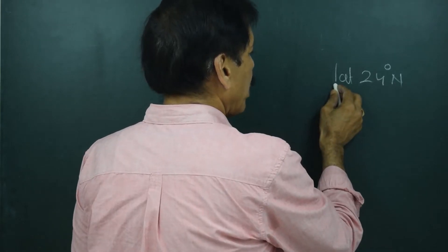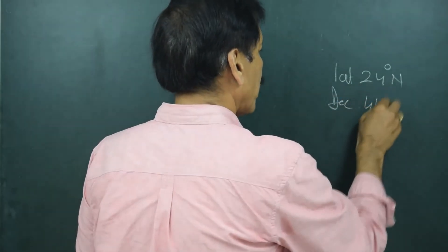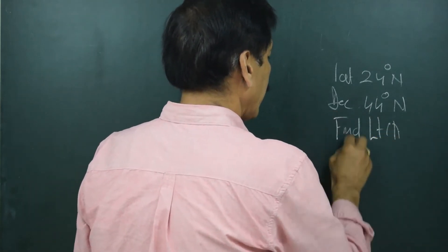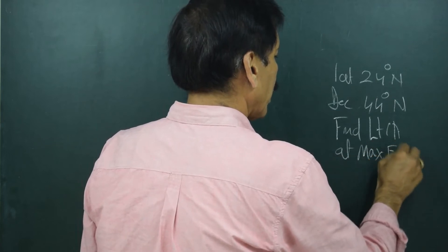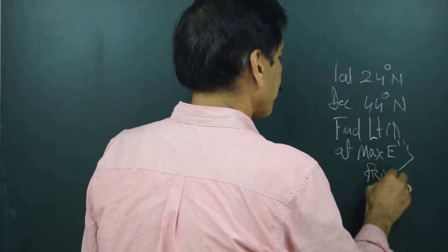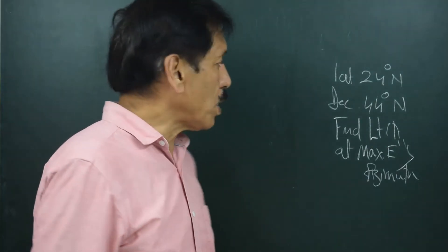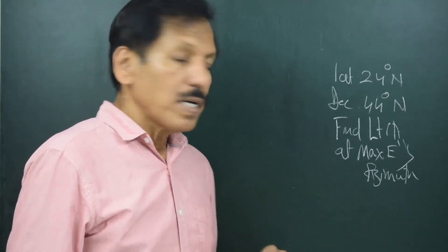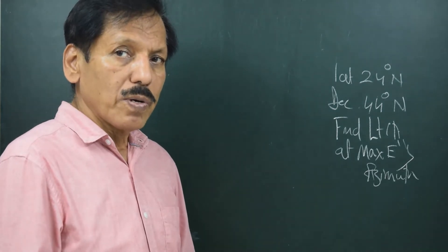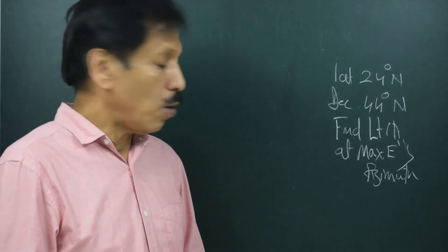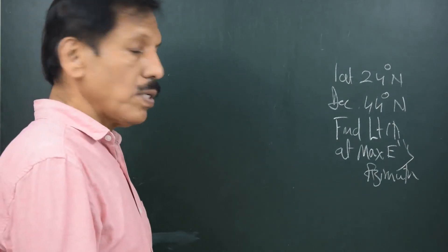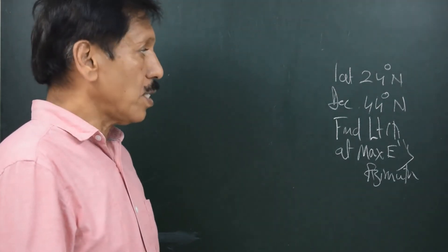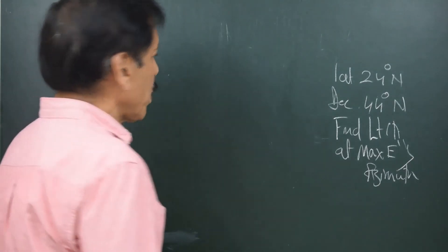So the question is observers latitude is 24 degrees north. Declination is 44 degrees north. Find LHA at maximum easterly azimuth. So it is a simple question latitude 24 degrees north, declination 44 degrees north. Find LHA at maximum easterly azimuth. So in this numerical we will also try to properly understand what do you mean by LHA. How do you measure it? Where do you measure it? Here in this question you see that the latitude and declination both are named north and total is not more than 90. This is the situation of maximum azimuth.